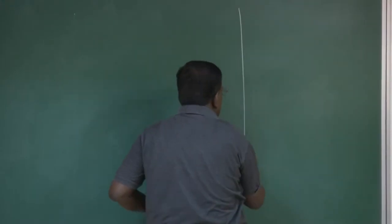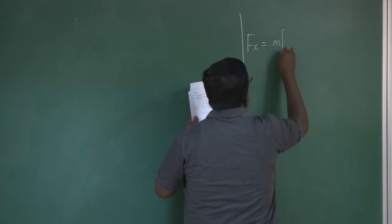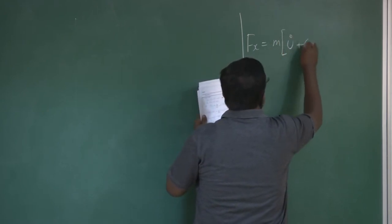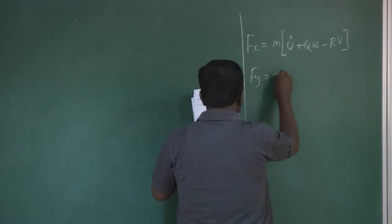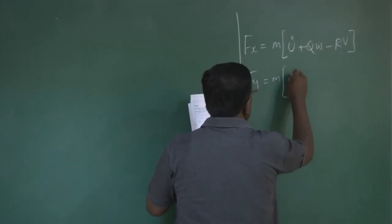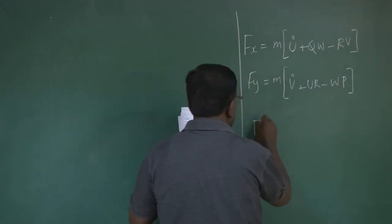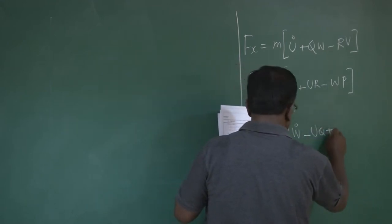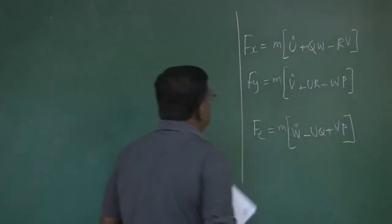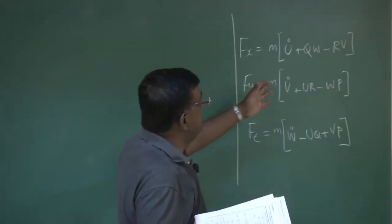So, for our ease of communication, I write fx = m u dot + qw - rv, fy = m v dot + ur - wp, and fz = m w dot - uq + vp. We have not asked this question: what are these fx, fy, fz composed of? We will come to that question. We have more focus on the right hand side, what are the kinematics part?